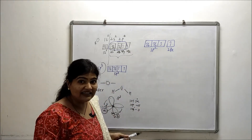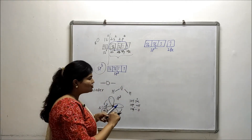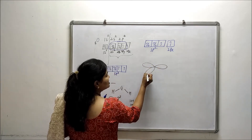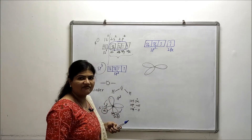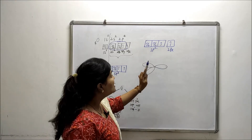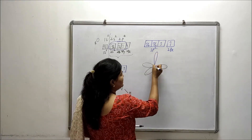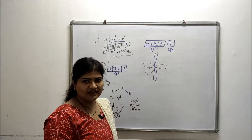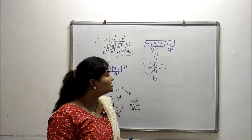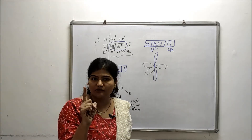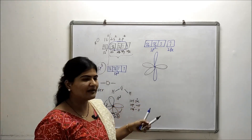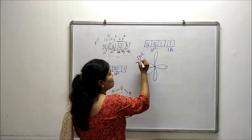We draw the three sp2 hybrid orbitals in trigonal planar geometry. Two of them will have lone pairs, and one has a single electron available for bonding. The unhybridized 2pz is perpendicular to the plane of the three sp2 hybrid orbitals. Oxygen goes for sp2 hybridization whenever it has to form a bond with only one other atom.